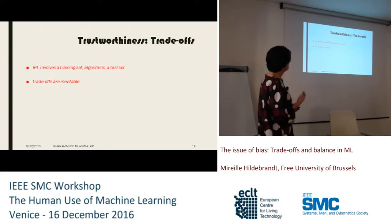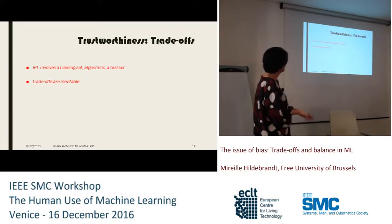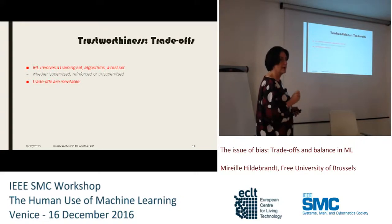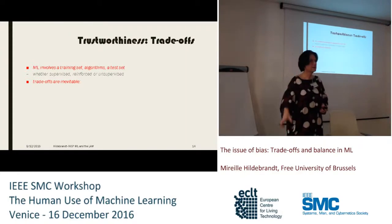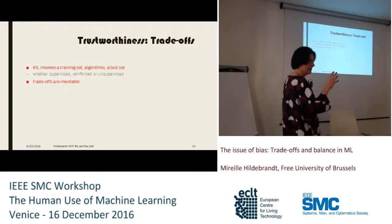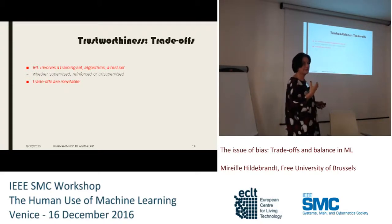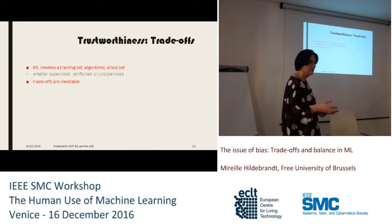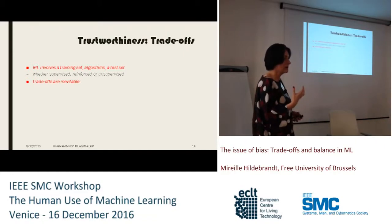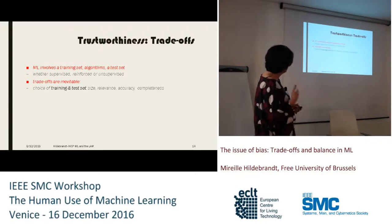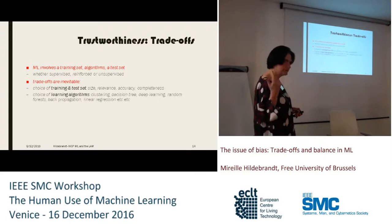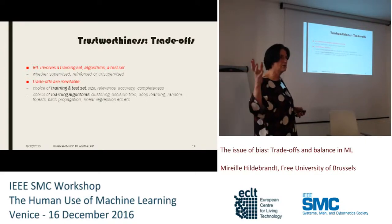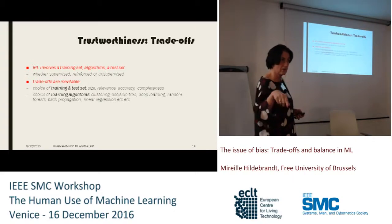Machine learning always involves trade-offs: a training set, algorithms, and a test set — even in unsupervised learning. Consider the dream machine: a system trained on animal faces, then shown plants, sees animal faces in those plants. So even unsupervised learning is about what you've trained your algorithm on. Trade-offs are inevitable — choice of training and test set means size, relevance, accuracy, and completeness. Are you going for low-hanging fruit? Do you have time and money to cleanse the data? Choice of algorithm: clustering, decision trees, deep learning.